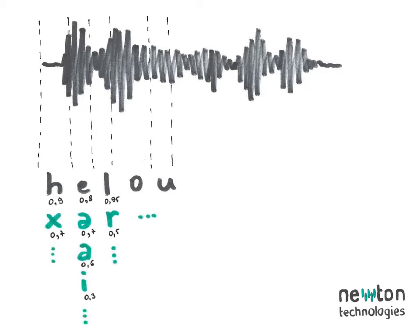For example, the first sound that I uttered might have been one phone, but it also could have been another. The second sound looks most like E, but it could also have been a different E, R, or even another variant — with different degrees of certainty. The next sound is probably L, but also could be R. There are different probabilities of these phones in context: H followed by E is more likely, at least in English. The more frequent combinations are given priority. The ASR system combines these bits of information and outputs the most likely result — a string of phones.